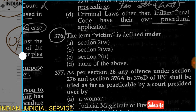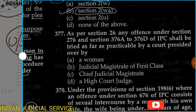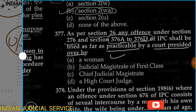Question 376: The term 'victim' is defined under Section 2(wa) — Option B is correct. Question 377: Under Section 27, any offense under Section 376 and Sections 376A to 376D of IPC shall be tried, as far as practicable, by a court presided over by a woman. These offenses relate to rape and offenses against women, so these cases should be presided over by a woman judicial magistrate of first class, chief judicial magistrate, or high court.